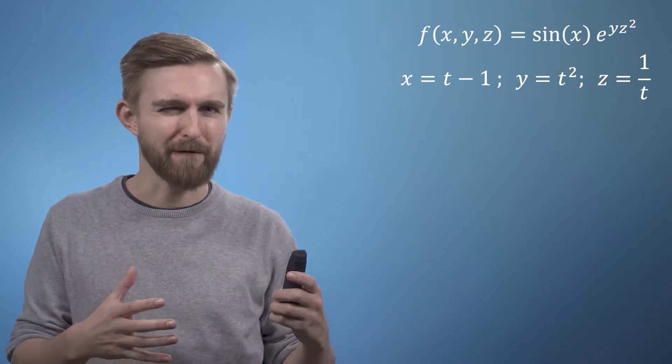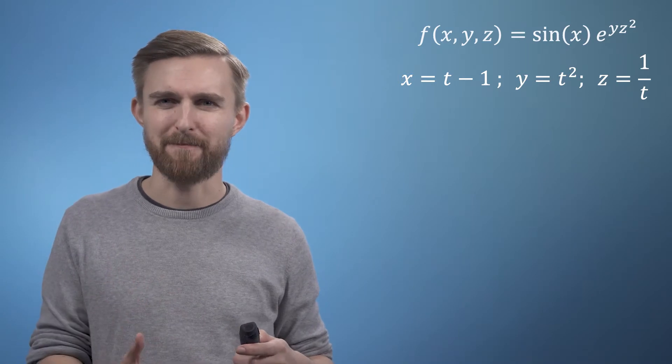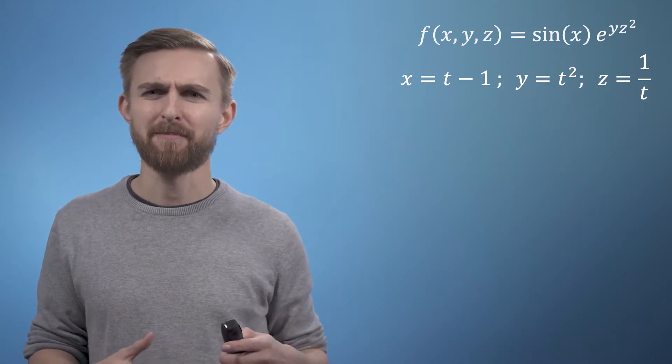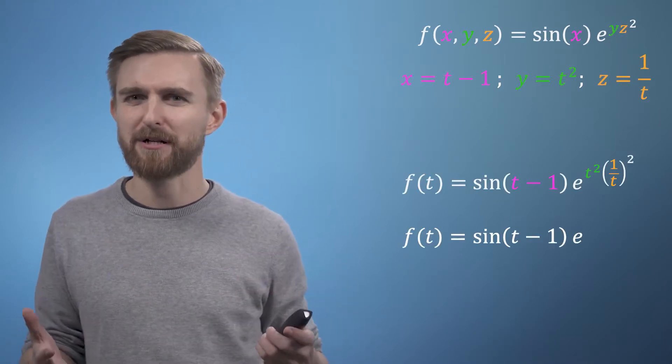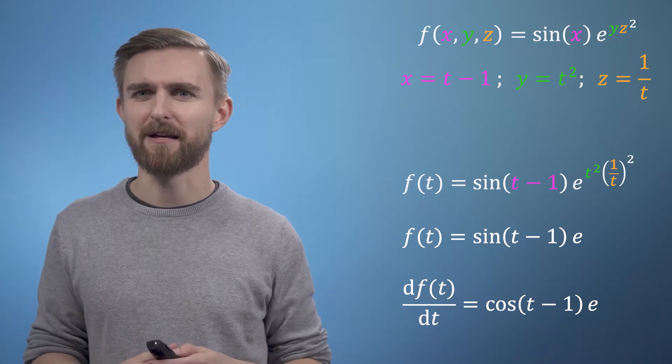And what we're looking for is the derivative of x with respect to t. In this simple case we could just substitute for all our three variables directly in terms of t, simplify a little bit and then differentiate directly with respect to t, which gives us sine of t minus 1 times e.